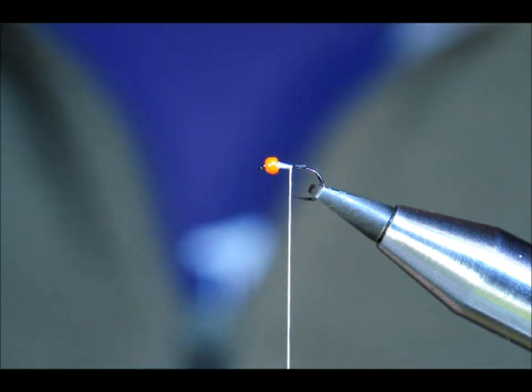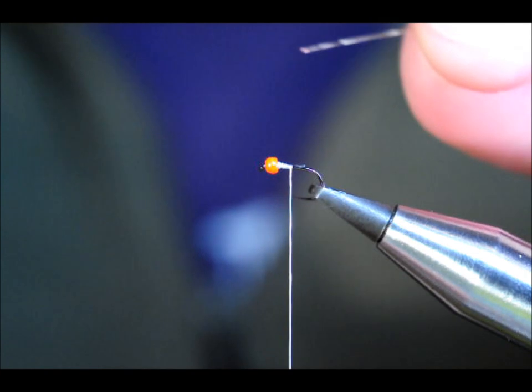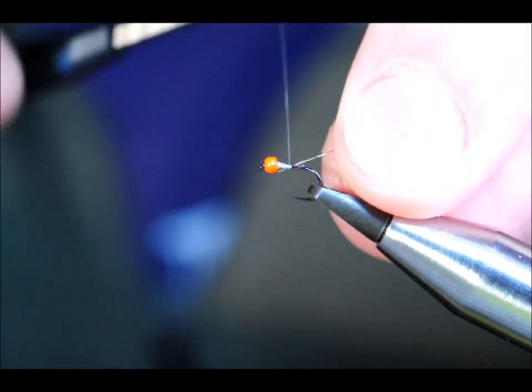The rib I'm going to use for this fairly simple nymph is a thin copper wire. I'll catch that in.